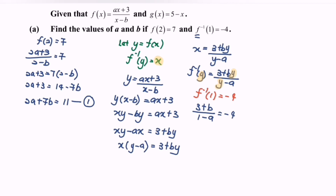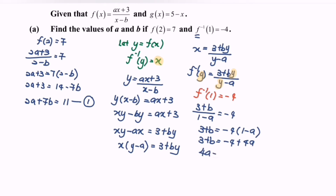Cross multiply: 3 + b = negative 4 multiplied with (1 - a). Expand and simplify: 3 + b = negative 4 + 4a. So 4a - b = 7. This will be our second equation.